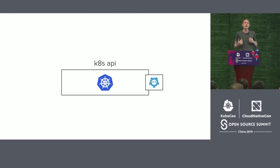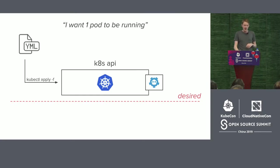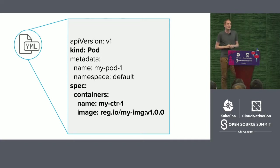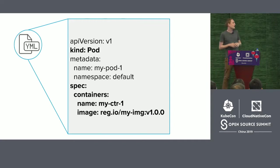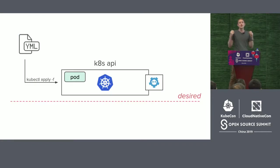The Kubernetes API is entirely declarative, so I might say: I want one pod to be running. You do this by posting YAML into the API, typically with kubectl apply -f. The important points in the YAML are the 'kind' — specifying the kind of resource object — and the 'spec' where you declare your desired configuration. We take this YAML, post it into the API, and it gets stored in the etcd datastore.